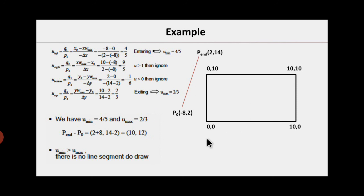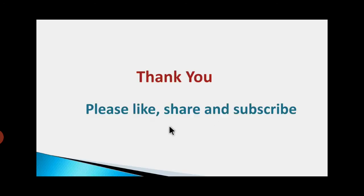So these are the two examples to help you understand how the Liang-Barsky algorithm finds the clipping portion of a line. In this video, we have seen the Liang-Barsky algorithm and two examples of how it finds the clipping portion. Hope you will be able to understand. Please like, share, and subscribe to the channel. Thank you.